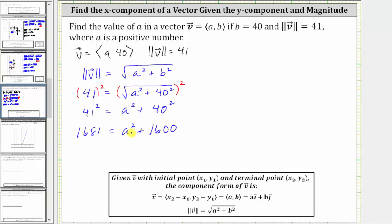And now we will isolate a squared by subtracting 1600 on both sides. Simplifying, on the left the difference is 81, we have 81 equals, on the right this difference is zero, so the right is now just a squared.